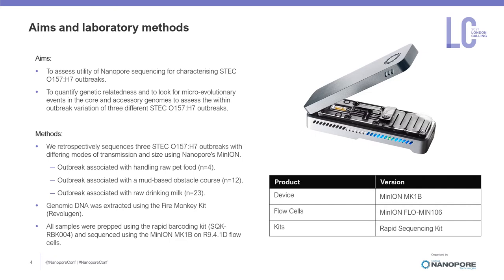We retrospectively sequenced three different outbreaks of different sizes: one was associated with handling raw pet food, one with a mud-based obstacle course, and one with raw drinking milk. All samples had DNA extracted using the Revolution Firefly Monkey kit, and all samples were prepped using the rapid barcoding kit and sequenced on the MinION Mark 1b.